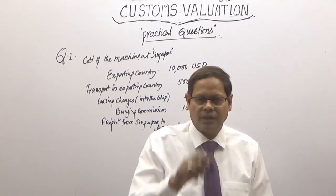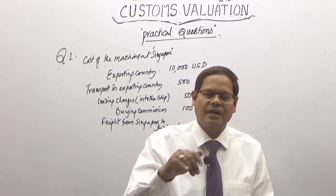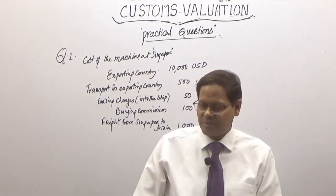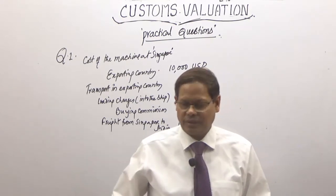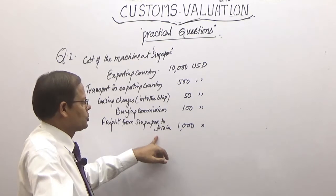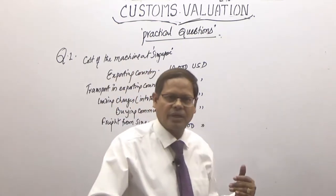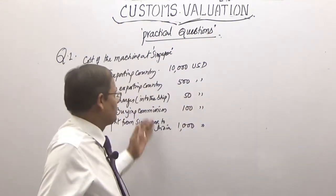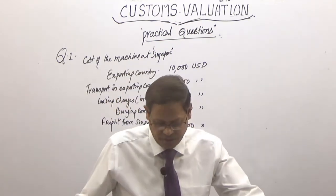As per Rule 10, commission is to be added other than buying commission. So buying commission is not a part of the assessable value. Then freight from Singapore to India — there are freight charges we need to add.